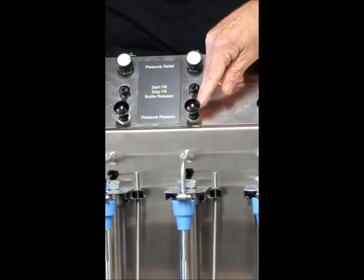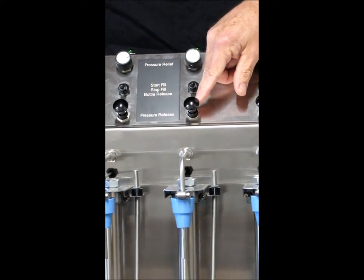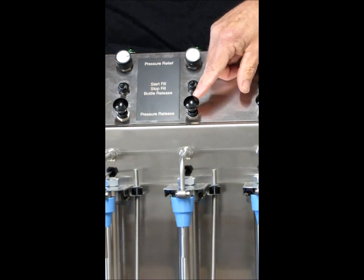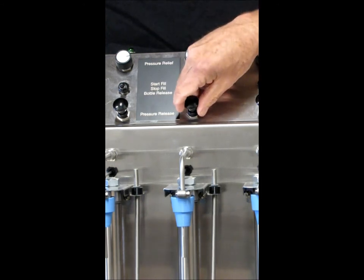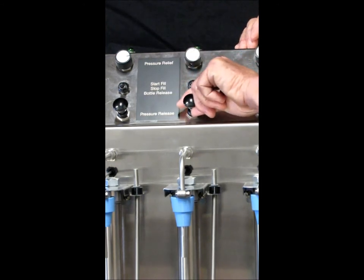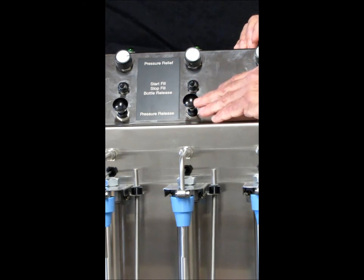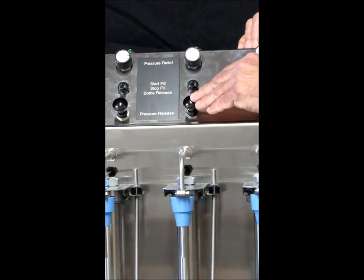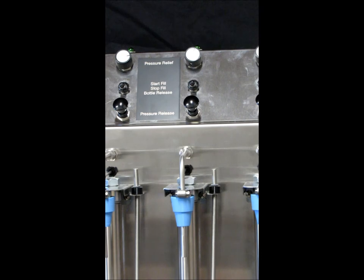And below there is a pressure release valve. This is a pull-push valve. You pull it to release the pressure and push it to hold the pressure in the bottle. What this valve does is it releases all the pressure in the bottle before you remove the bottle from the filler.